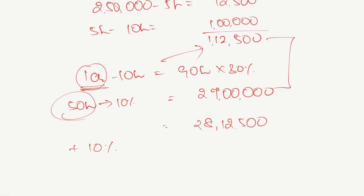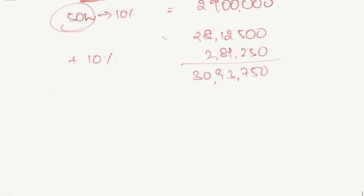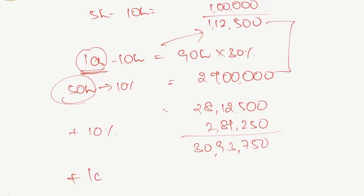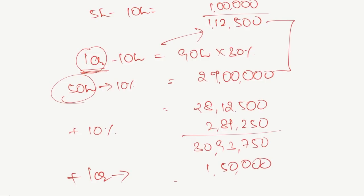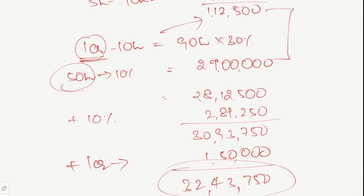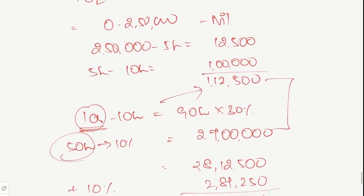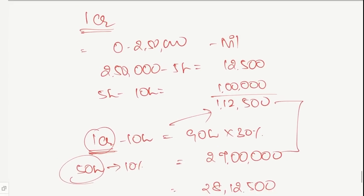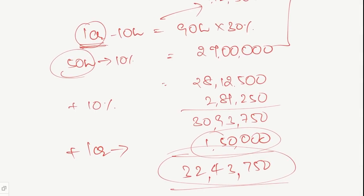10% surcharge on 28 lakhs 12,500 gives 2 lakhs 81,250. Adding both, we get 30 lakhs 93,750. To this, we add the income which exceeds the second surcharge limit of 1 crore — the assessee's income exceeds 1 crore by 1 lakh 50,000. Adding that gives a total of 32 lakhs 43,750. Under the marginal relief method, we restrict the income to 1 crore, calculate tax on that, then add only the excess amount of 1 lakh 50,000.